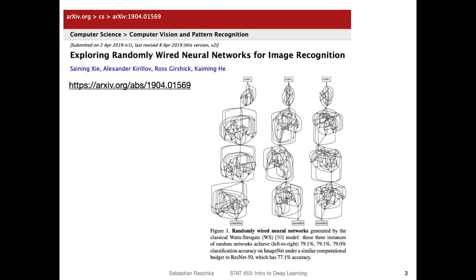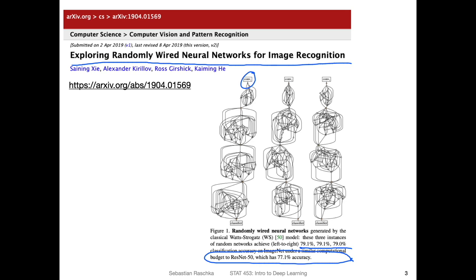So where would this be useful? One thing that came to mind is this paper exploring randomly wired neural networks for image recognition. It's a paper from about two years ago where researchers proposed a method for randomly connecting neural networks — I think also involving convolutional layers. They used evolutionary algorithms or genetic algorithms to learn these by optimizing a fitness function. They found that this randomly wired architecture performs better, for example, than existing ones based on ResNet. The ResNet architecture achieved 77.1% accuracy on ImageNet, and this randomly wired one achieved a higher accuracy, even though it seems arbitrary.